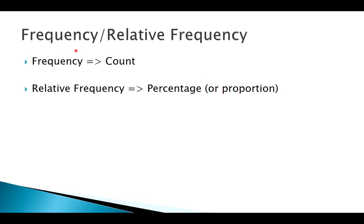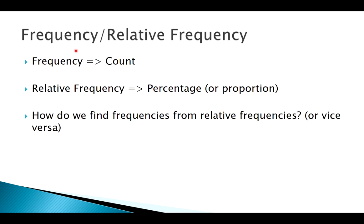So if we have a frequency, how do we find a relative frequency? Well, we just take the frequency divided by the total. That leaves us with our relative frequency. It's very easy to find, but just terminology-wise: frequency is count, relative frequency is the percentage of the whole.